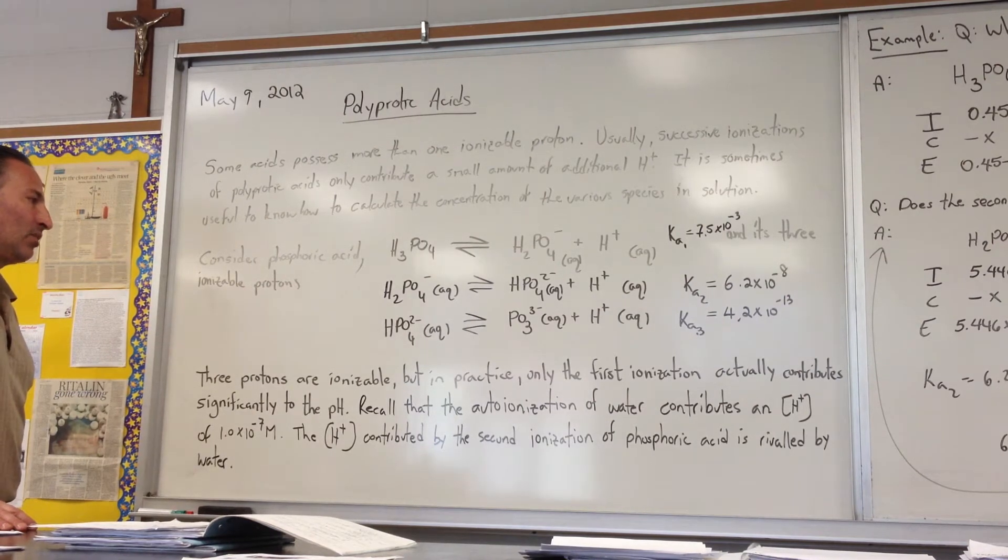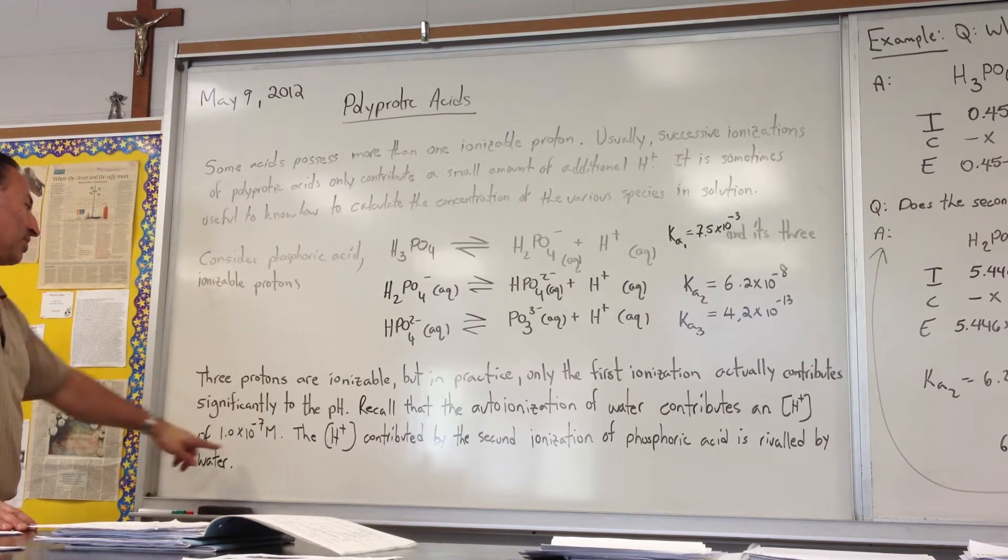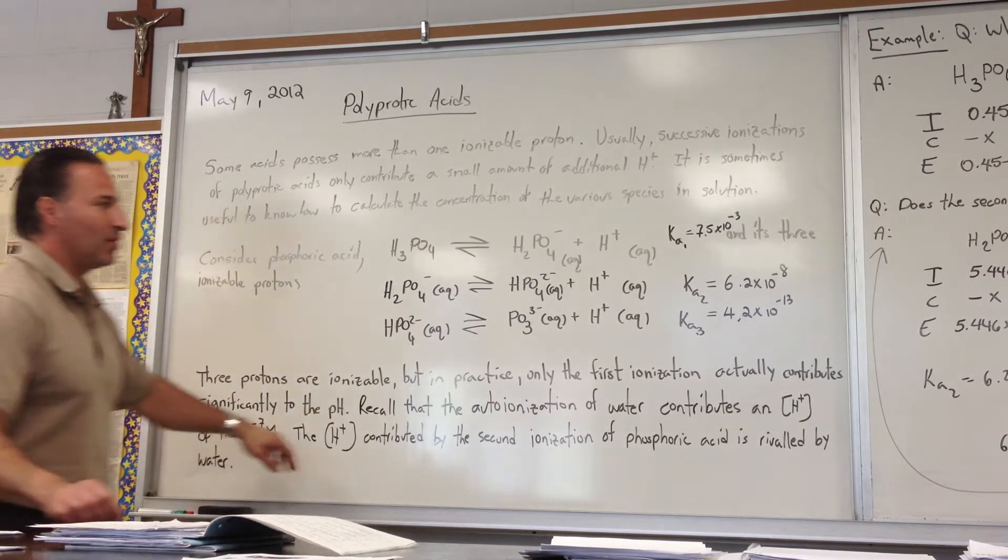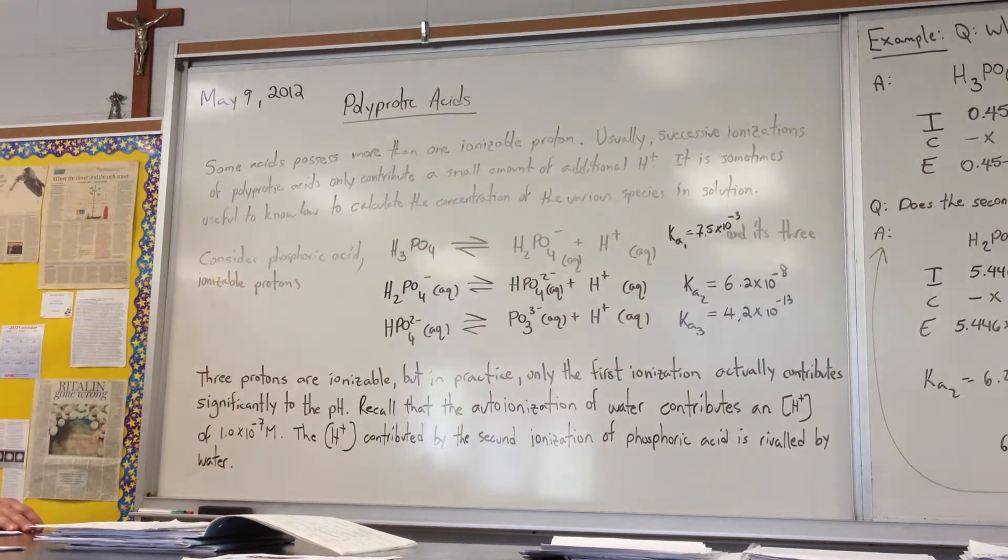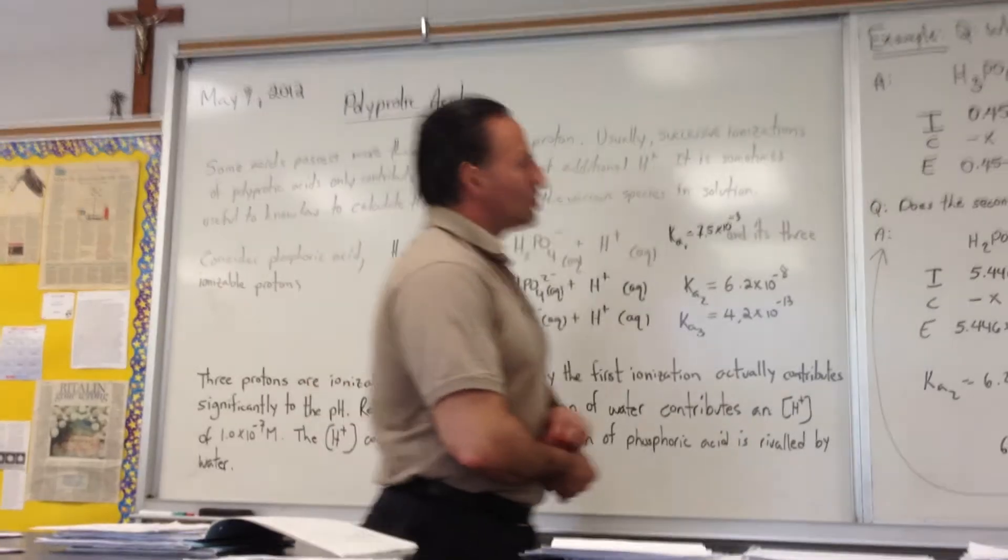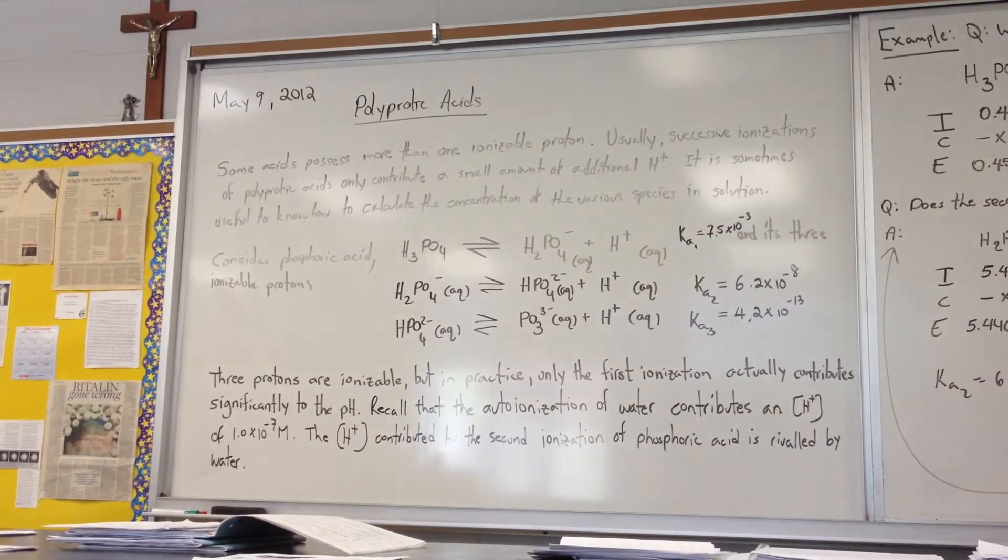Recall that the auto ionization of water also contributes a hydrogen ion concentration of 1.0 times 10 to the minus 7. So compare that to these two values and you'll see that even the auto ionization of water is more significant. So let's find out just how much hydrogen ion we get from the first ionization.